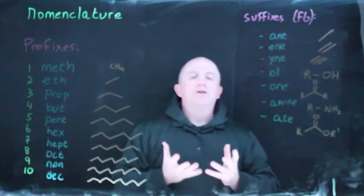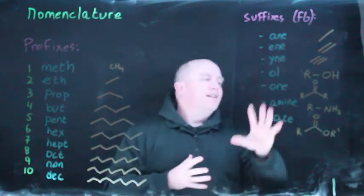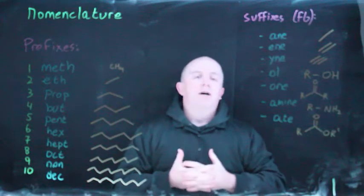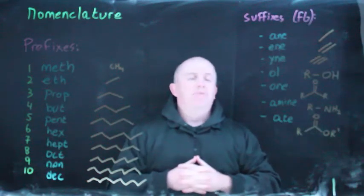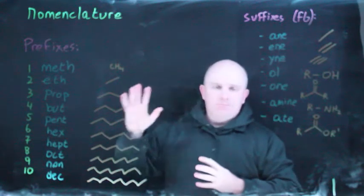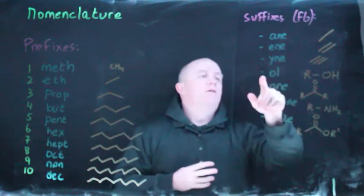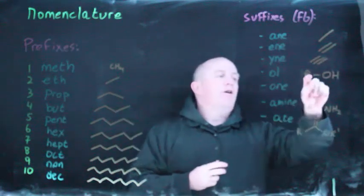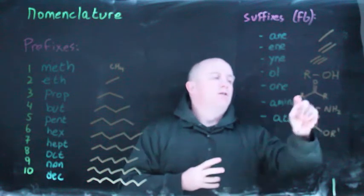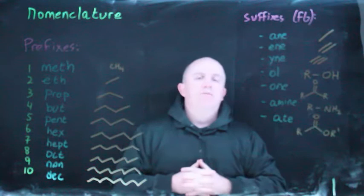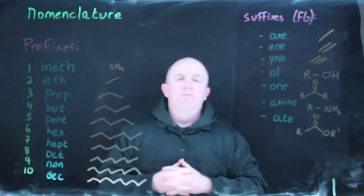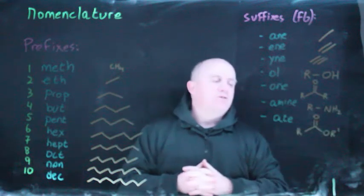You also need to memorize key functional group suffixes. '-ane' means the molecule is completely saturated with no double bonds. '-ene' refers to having a double bond — you could have a diene or triene for multiple double bonds. '-yne' refers to a triple bond. '-ol' means you have an alcohol, which is R singly bonded to an OH. '-one' refers to a ketone — a carbon double bonded to oxygen with two carbons attached.